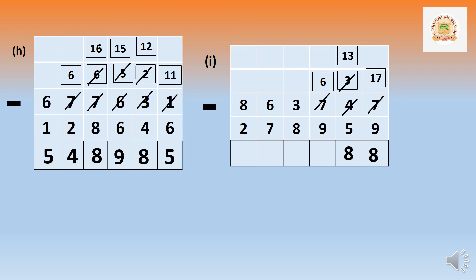In the hundreds: 6 cannot minus 9. Borrow from 10,000 — it becomes 1,600. Sixteen minus 9 equals 7. In the thousands: 2 cannot minus 8. Borrow from 60,000 — it becomes 12,000, and 60,000 becomes 50,000. Twelve minus 8 equals 4.